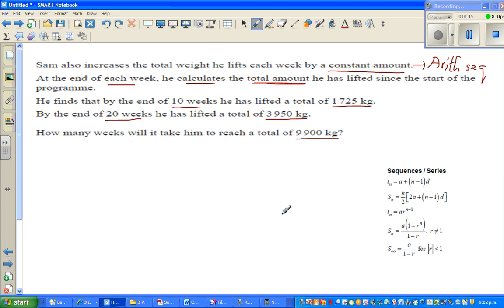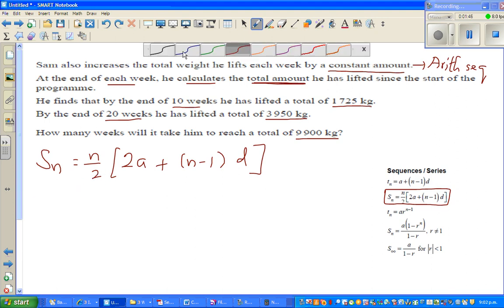The question is how many weeks will it take for him to reach 9900 kg. So this is the formula of Sn or the total in an arithmetic sequence. Let me write the formula: Sn stands for the sum of the terms in an arithmetic sequence, which is n over 2 times 2a plus (n minus 1) times d. In one of my videos I have proved this formula.